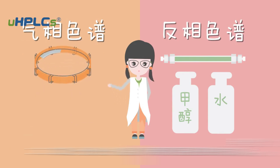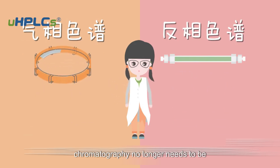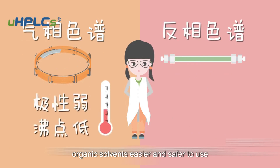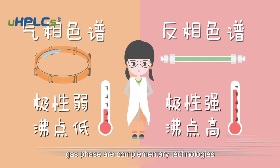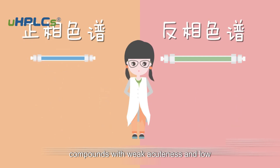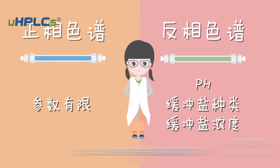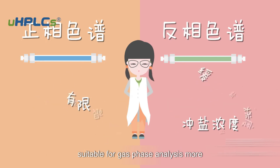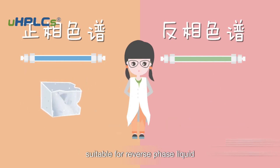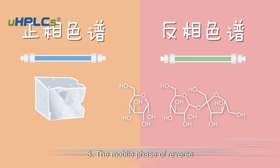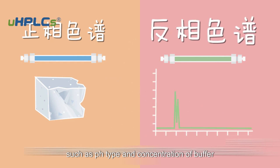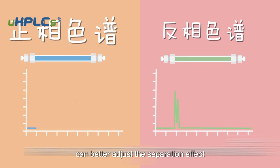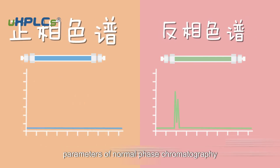Why is reversed phase so dominant? First, the mobile phase of reversed phase chromatography no longer requires preparation with more dangerous organic solvents, making it easier and safer to use. Second, liquid chromatography and gas chromatography are complementary technologies. Highly polar compounds, because their intermolecular forces are stronger and boiling points are not low, are not suitable for gas phase analysis but are more suitable for reversed phase liquid chromatography. Third, the mobile phase of reversed phase chromatography has more parameters to choose from, such as pH, type, and concentration of buffer salt, allowing better adjustment of the separation effect. In contrast, the adjustable mobile phase parameters of normal phase chromatography are very limited.